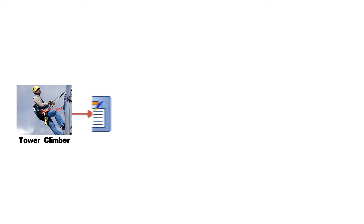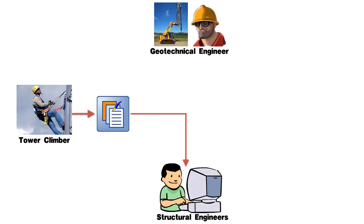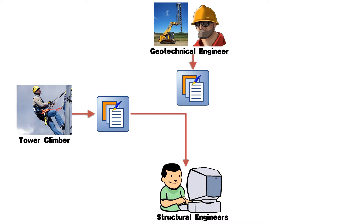Now let's see the data communication interaction. Tower climbers map the tower and prepare the mapping report, which is then sent to the structural engineers. The geotechnical contractor performs the geotechnical investigation and prepares the geotechnical report, which is also sent to the structural engineers.